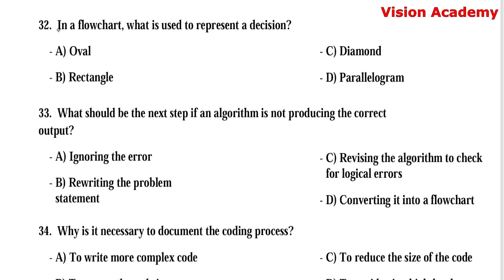Question number 32: In a flowchart, what is used to represent a decision? Option A, oval. Option B, rectangle. Option C, diamond. Option D, parallelogram. Here, option C, diamond, is used for decision making. Diamond is also called a rhombus.